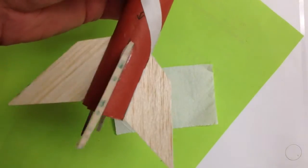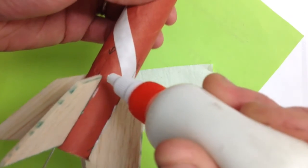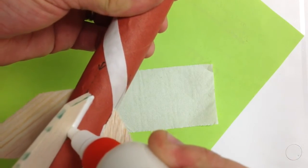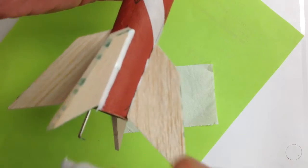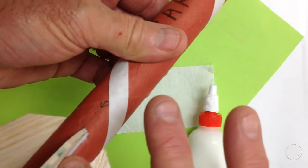After your fins have been on for 5 to 10 minutes, or overnight, take your tacky glue again and put a bead of glue along one edge of that fin. Take that bead of glue and spread it out.